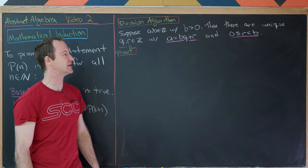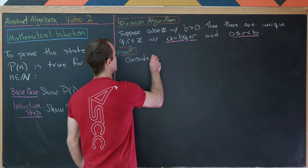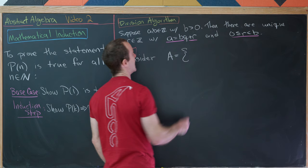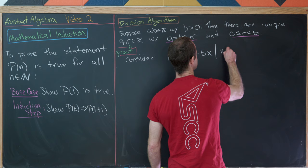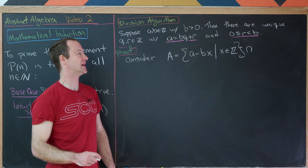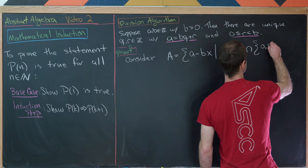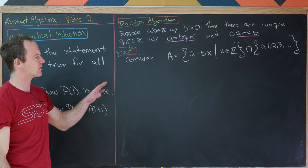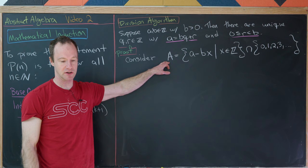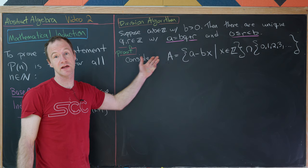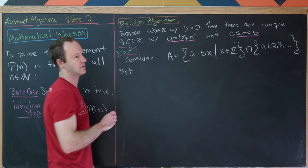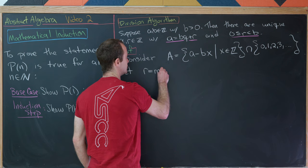Let's look at the proof. Consider the set A = {A − B·x : x ∈ ℤ} intersected with the non-negative integers {0, 1, 2, 3, ...}. This is a subset of the integers bounded below, so by the well-ordering principle it has a minimal element. We'll set R equal to the minimum of this set A, and set Q to be the corresponding X value — so that R = A − B·Q, which gives A = B·Q + R.